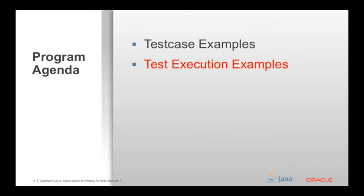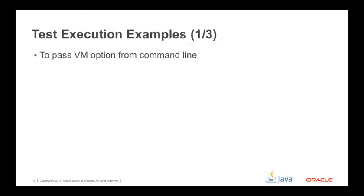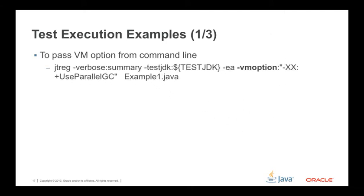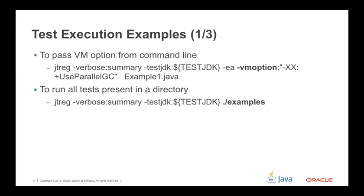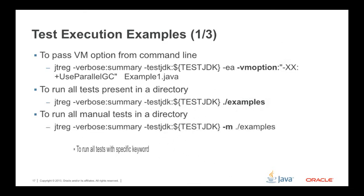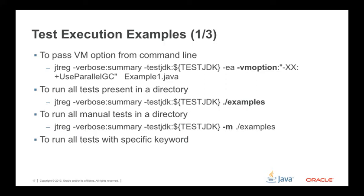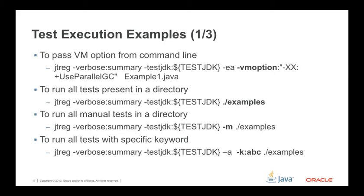Let me now move over to test execution examples using JTREG. To pass a VM option from the command line, pass '-vmoption' to the JTREG command — you can use this option multiple times. To run all tests present in a directory, specify the directory name containing JTREG test cases. To run all manual tests in a directory, use the '-m' option with JTREG. To run all tests with a specific keyword, use the '-k:keyword' option; that keyword should be present in the test.root file.